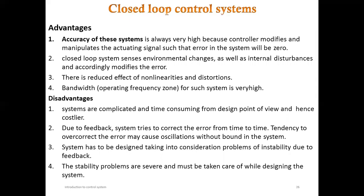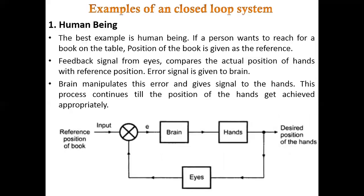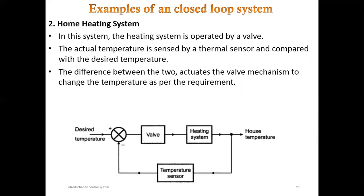Designing a closed loop or feedback control system is time-consuming and process-oriented work. A best example of a closed loop system is the human being — the eyes act as a feedback loop, and the hand and brain act as the input reference. For example, if a book is placed away from you, you know how many steps to move, and your eyes give the feedback signal. When your hand touches the book, the eyes confirm — now hold the book.